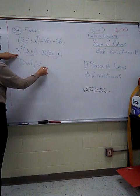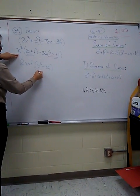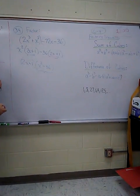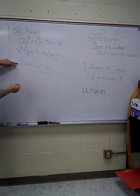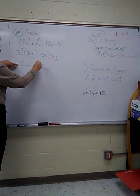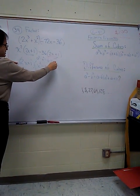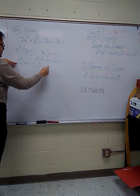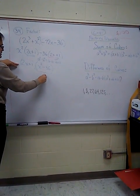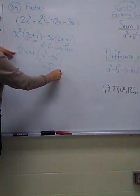x squared minus 36. That looks like difference of squares right there. a squared minus b squared is a minus b times a plus b. If you remember, a squared minus b squared, that's a minus b times a plus b. So here I'm going to have x minus 6 times x plus 6.